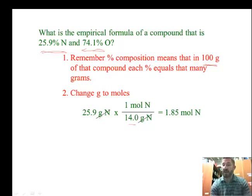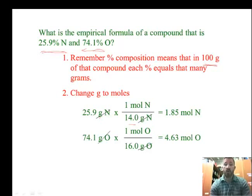That gives us 1.85 moles of nitrogen. Now we're going to do the same thing with the oxygen. Let's say 74.1 grams of oxygen. We're going to change grams to moles. So we'll say 1 mole of oxygen has a mass of 16.0 grams of oxygen. And when we divide those out, we see grams of oxygen cancel. We get 4.63 moles of oxygen. So now we've done the second step.